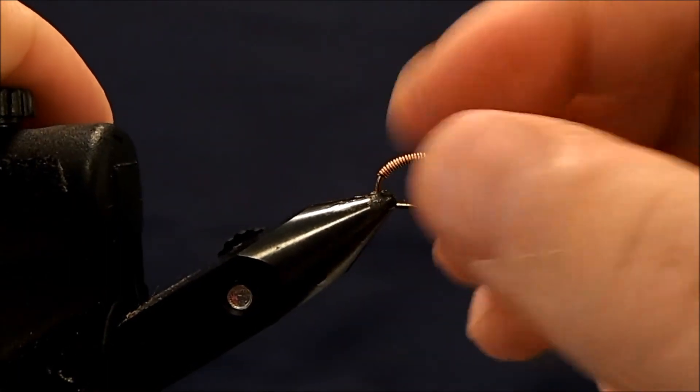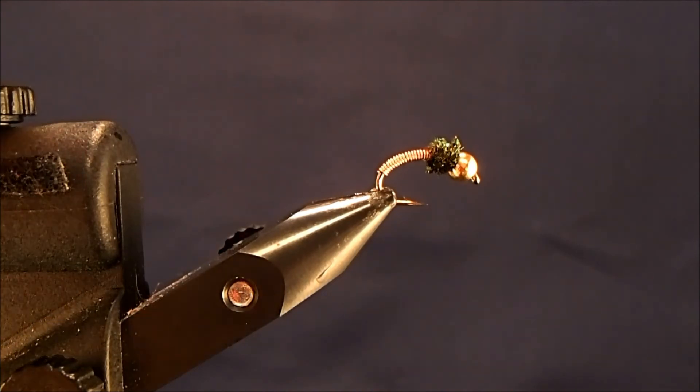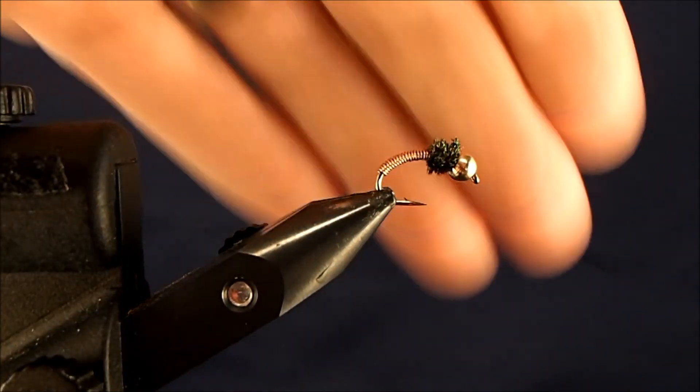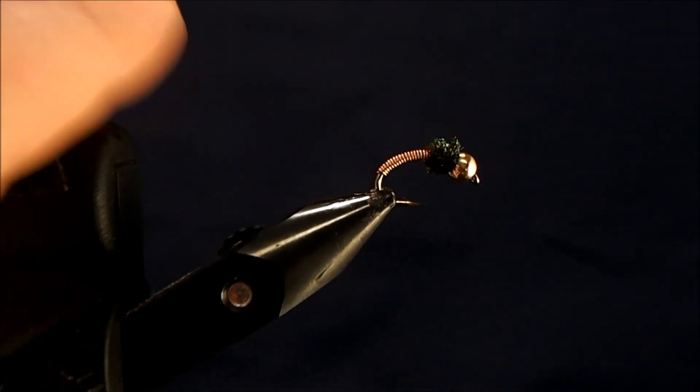I've seen the thorax tied with muskrat fur and other types of dubbing material. I really like the peacock, either natural or the ice dubbing. So that is a brassy.